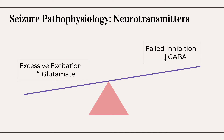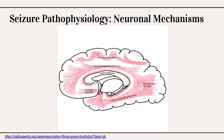Regardless of underlying etiology, all seizures involve an electrical disturbance in which a population of neurons rapidly and repetitively fires electrical signals. This electrical disturbance can be caused by an excess in excitation by glutamate, failure of inhibition by GABA, or a combination of both of these factors. In addition to an imbalance of neurotransmitters, there are also neuronal mechanisms responsible for seizures. Instead of firing a single action potential, neurons may experience a paroxysmal depolarizing shift, which causes excessively prolonged and repetitive neuronal firing, resulting in multiple action potentials being fired.